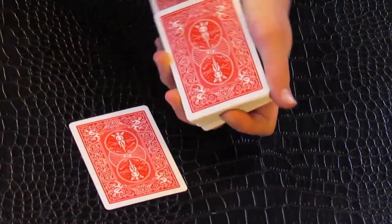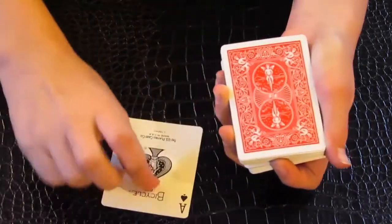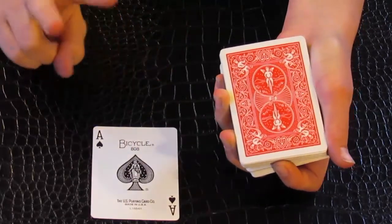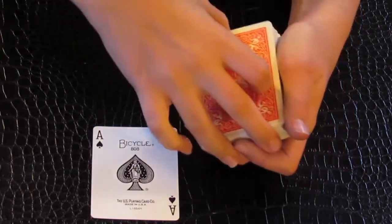Now you have the spectator look at their card. Ooh, an Ace of Spades, that's pretty cool. But it's not cool enough to be called a trick. So we can add on to that.